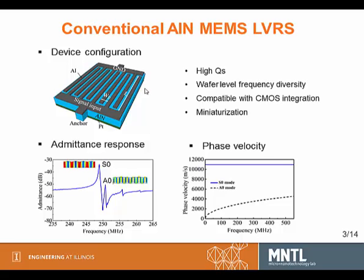This is the device of the conventional aluminum nitride MEMS resonator. We can say it consists of three layers: the bottom layer is usually metal, the middle layer is aluminum nitride film, and the top layer we call interdigital transducers. It has advantages of high Q, wafer-level frequency diversity, seamless integration capability, and miniaturization.